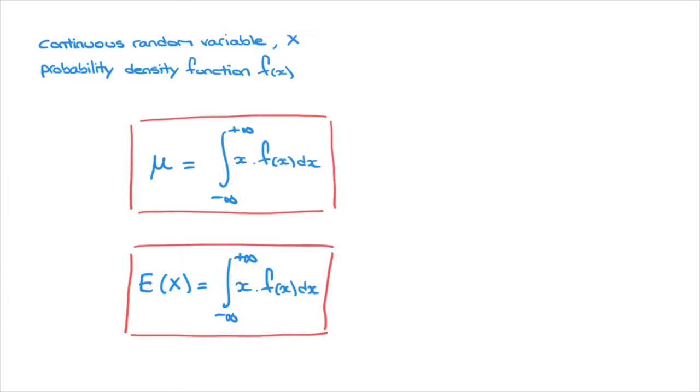To be clear, both of these formulas are exactly the same. The only distinction is the terminology. In the first, we're referring to the mean value, and in the second, we're referring to the expected value. Both things mean exactly the same thing.